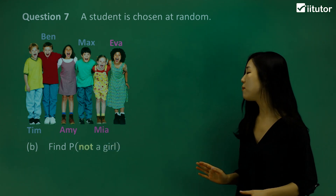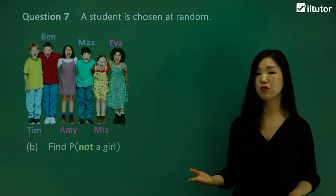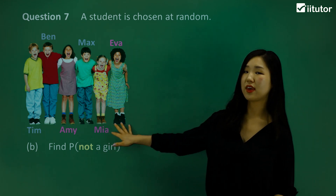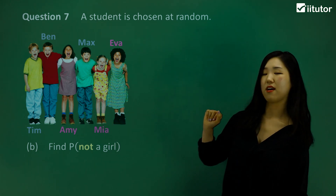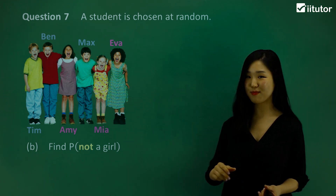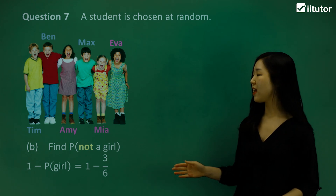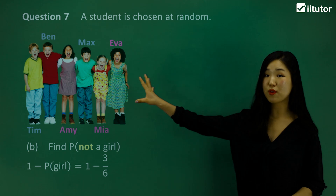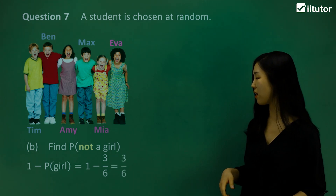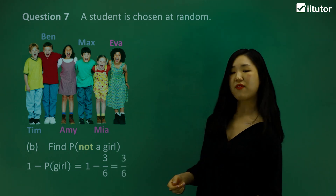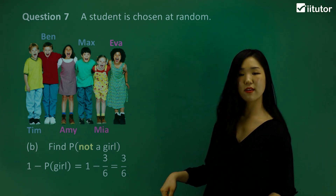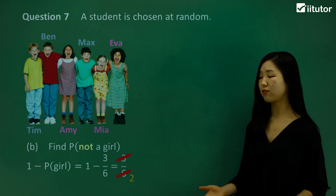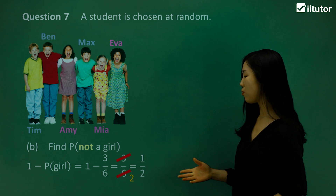B: find the probability of not a girl. That means we do 1 minus the probability of being a girl. You can see that 3 of them are girls — Amy, Mia, and Eva. So the probability of not a girl is 1 minus 3/6. That will still be 3/6. Let's simplify by 3 — 3 is a common factor. So the final answer is 1/2, or half. Half of them are not a girl.